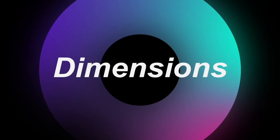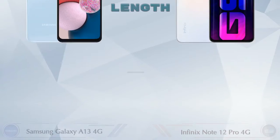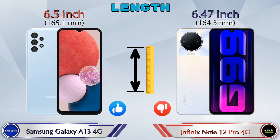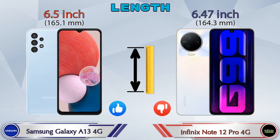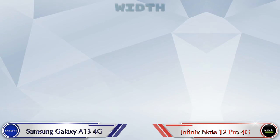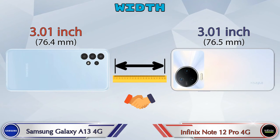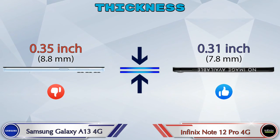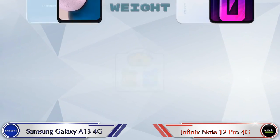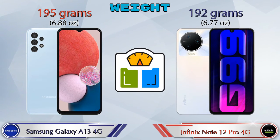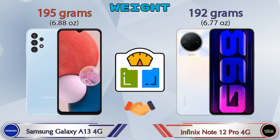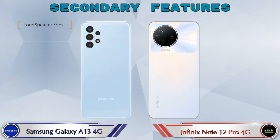Now let's check the dimensions. The Galaxy A13 4G has a 6.5-inch display and the Note 12 Pro 4G has a 6.47-inch display, which is slightly smaller. The width is the same in both phones at 3.01 inches. For thickness, the Galaxy A13 4G is 0.355 inches and the Note 12 Pro 4G is 0.31 inches. For weight, the Galaxy A13 4G is 195 grams and the Note 12 Pro 4G is 192 grams — almost similar.